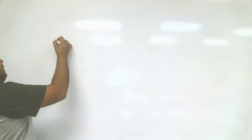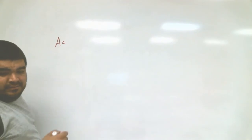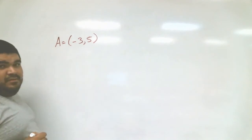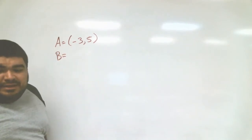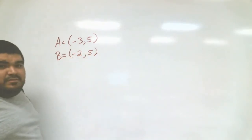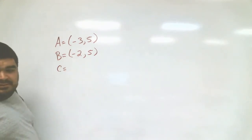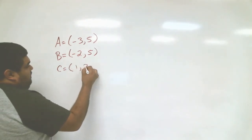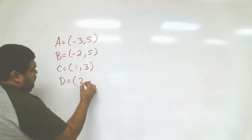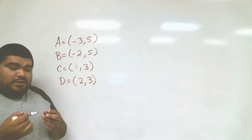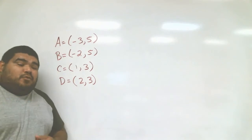Now that we know what functions are and what coordinate points are, we can start graphing some points, connect them, and see what kind of shape they make. Once we do that, we have to do the vertical line test to see if it's a function or not. We have four points to graph. Point A is at negative 3 and 5, point B is at negative 2 and 5, point C is at 1 and 3, and point D is at 2 and 3. Make sure you have them down on your paper.